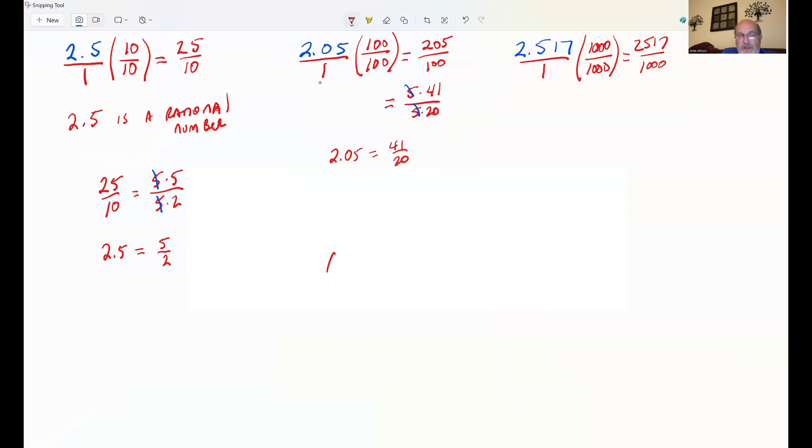So anyway, that's showing that any terminating decimal is a rational number. And that's what we set out to show you. So you can convert any terminating decimal to a fraction where the numerator and denominator are both integers showing any terminating decimal is a rational number.